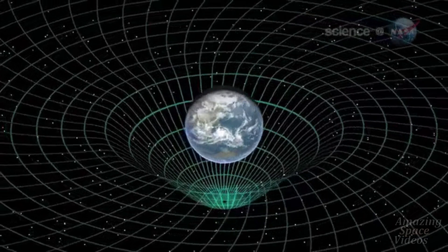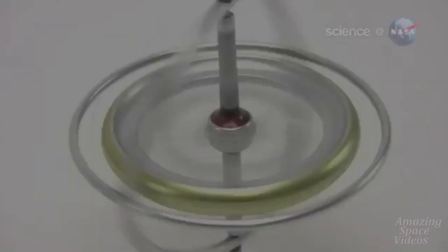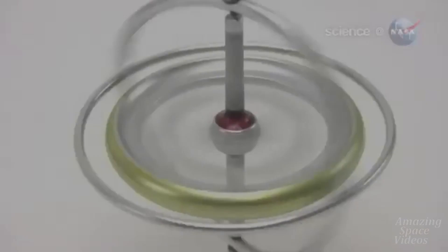This is what Gravity Probe B went into space in 2004 to check. The idea behind the experiment is simple. Imagine trying to spin a toy top on the dimpled surface of that trampoline. It's going to wobble, right?